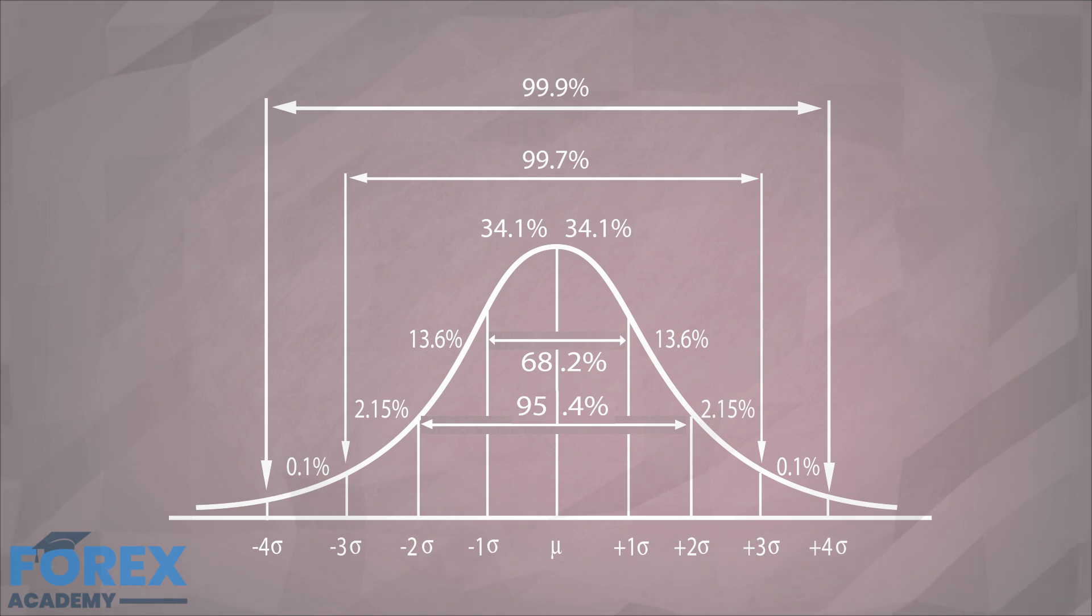In the case of retracements, we can see that the average plus one standard deviation would be a very high probability entry point, since only 16 percent of the cases the retracement went further down.